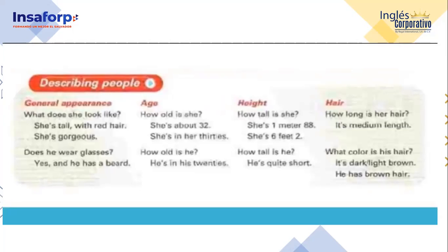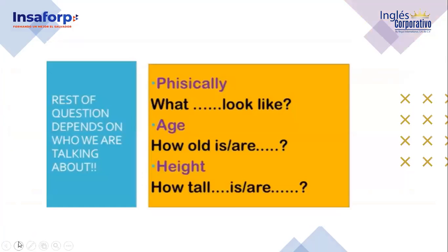Do you have any questions? Remember the questions: What does she look like? Does he wear glasses? How old is she? How old is he? How tall is she? How tall is he? How long is her hair? And what color is his hair? For general physical appearance, we use: What does he look like? Or, what does she look like? For age, we use how old — how old is he, how old are they, how old is she. For height, how tall — how tall is he, how tall are they.